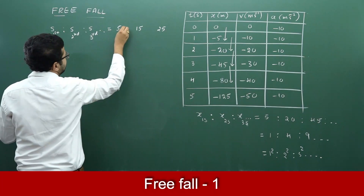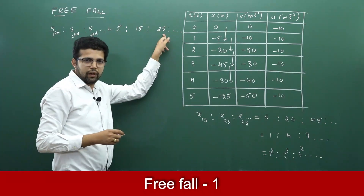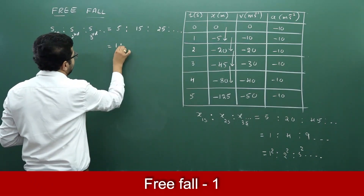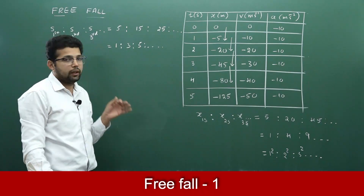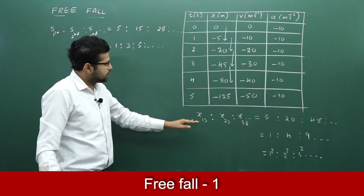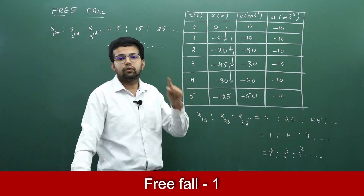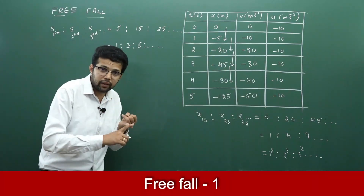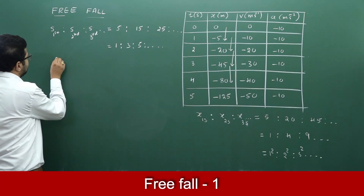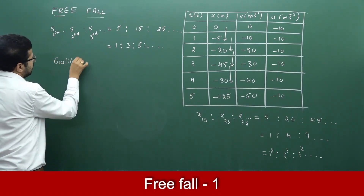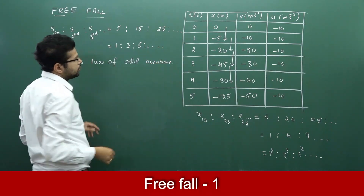What is the ratio of distance travelled in the 1st, 2nd, 3rd second? 5 : 15 : 25 can be written as 5×1 : 5×3 : 5×5, which gives the ratio 1 : 3 : 5 : 7 and so on. These are all odd numbers, and this law we call Galileo's law of odd numbers.